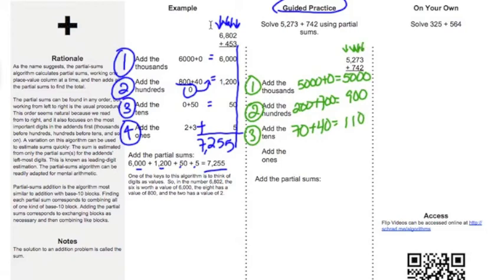And then my last step will be the ones place, which is 3 plus 2, and that equals 5. So then what I need to do is I need to add them all together. 0 plus 0 plus 0 plus 5 is 5. 0 plus 0 plus 1 is 1. 9 plus 0 plus 1 is 10. 5 plus 1 is 6. So I get 6,015 is my partial sum.